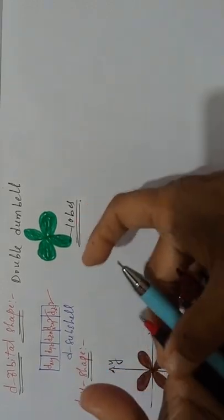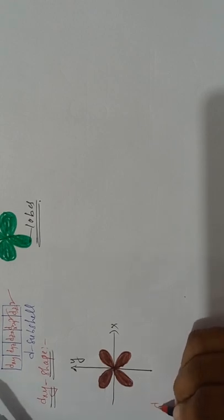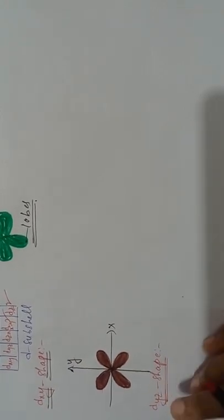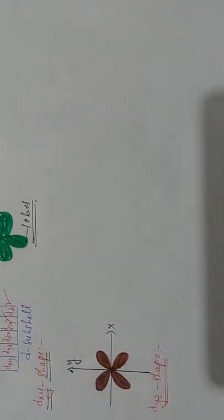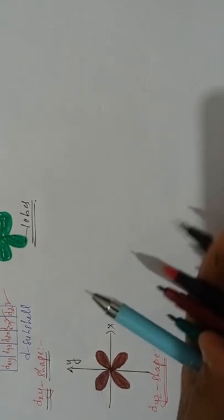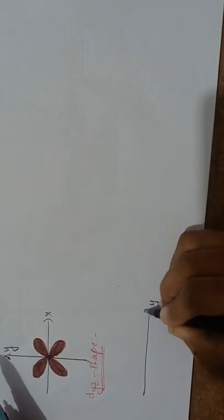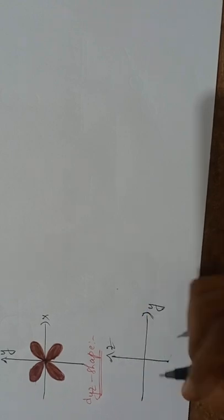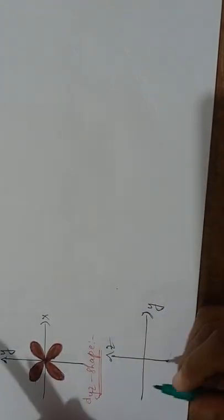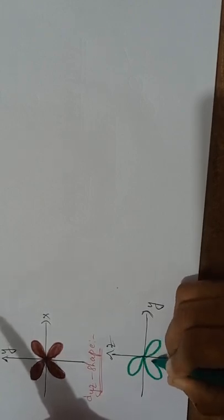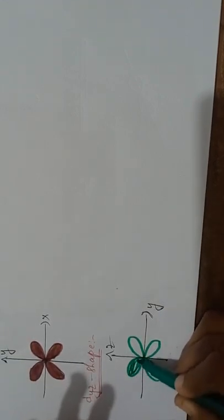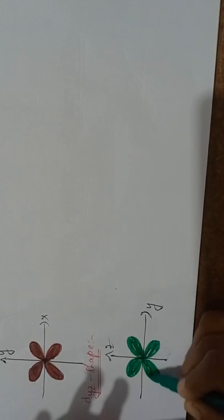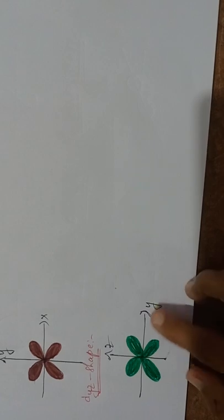Next, D-YZ. D-YZ means you take only the Y axis and Z axis. The structure is the same — double dumbbell shape in between the Cartesian axes. You just change the axis. I am taking Y axis and Z axis. In between the Y-Z axes, the double dumbbell shape will be there. This is the D-YZ shape.